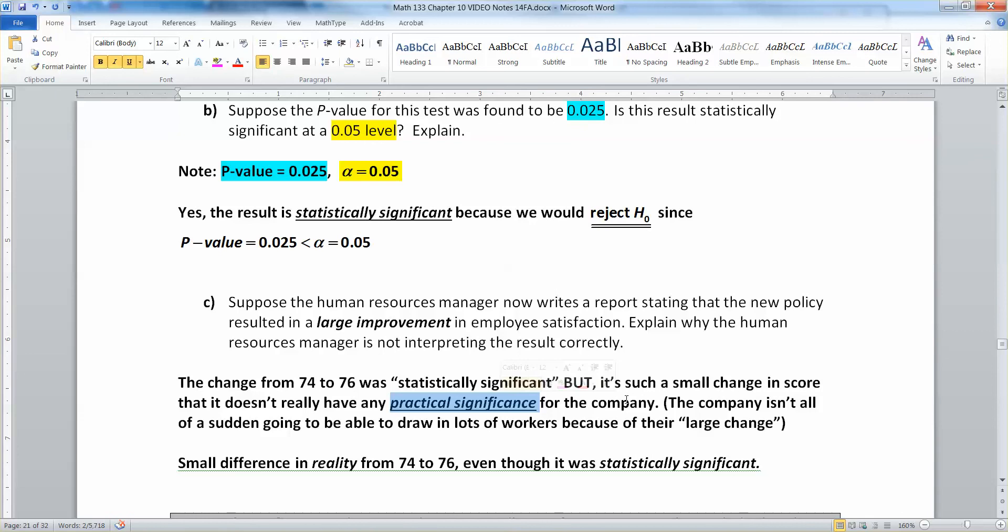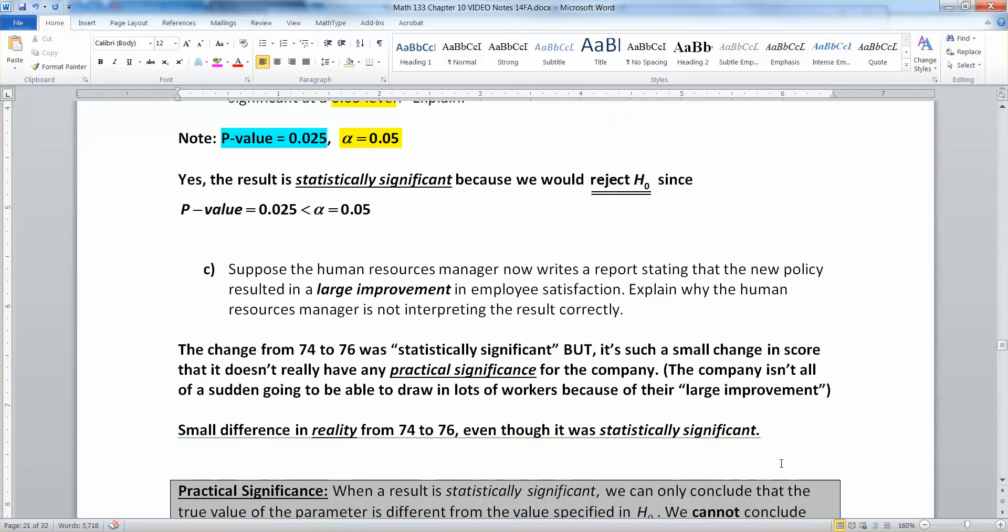The company isn't all of a sudden going to be drawing in lots of workers because of their large improvement. They didn't all of a sudden transform into a different company. So it's a small difference in reality from 74 to 76. Even though it was statistically significant, it's not practically significant. It doesn't really mean much in real life to this company.